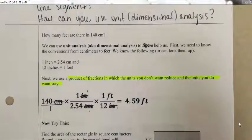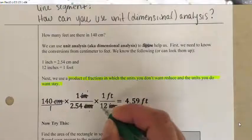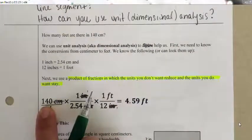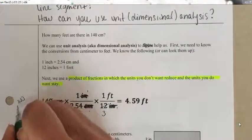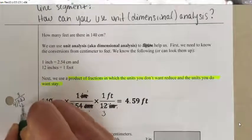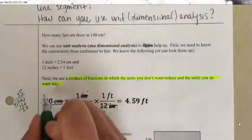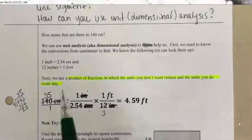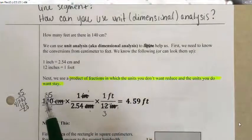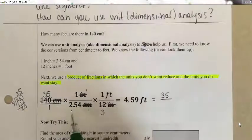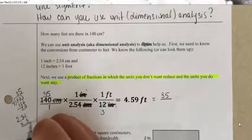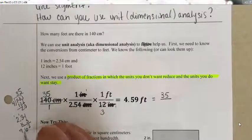Now I'll do some multiplication. I have 140 in the numerator. Both 140 and 12 can be divided by 4: 140 divided by 4 is 35, and 12 divided by 4 is 3. So I multiply straight across top and bottom: 35 times 1 times 1 over 2.54 times 3, which gives me 35 over 7.62.